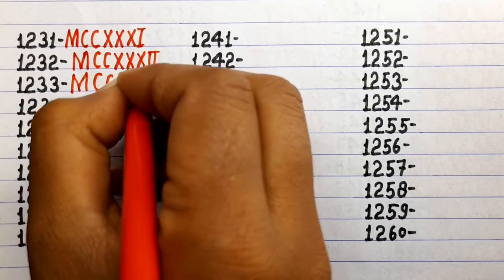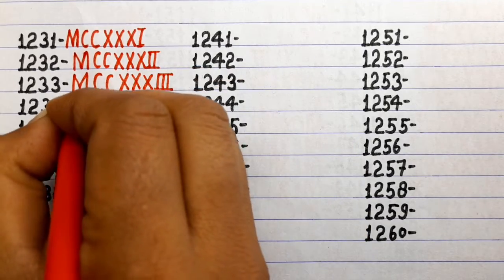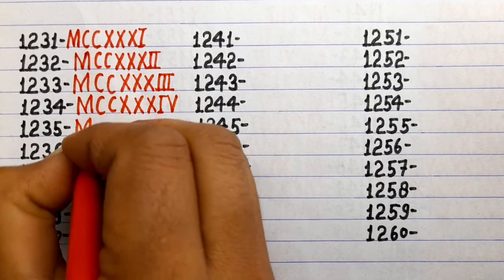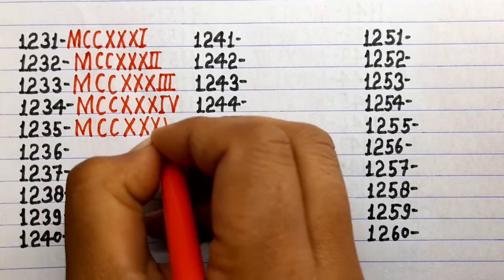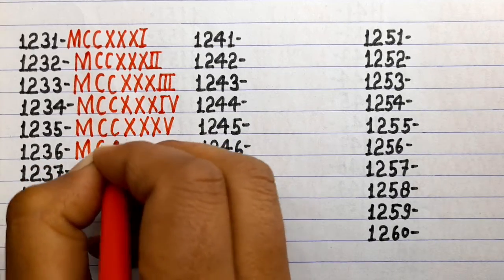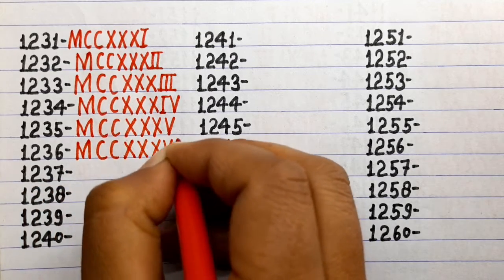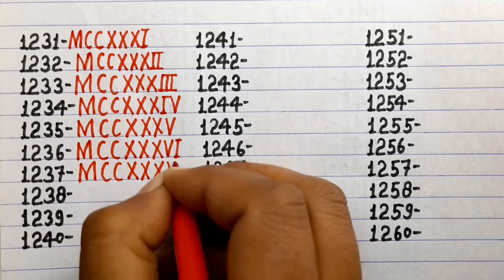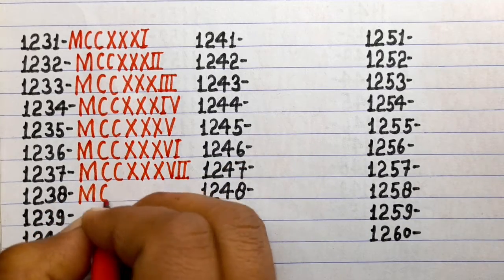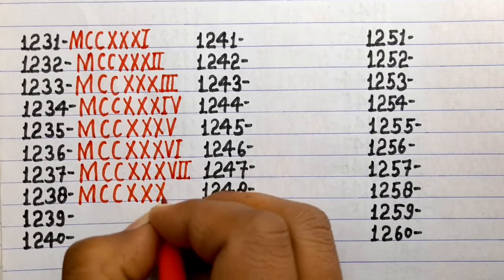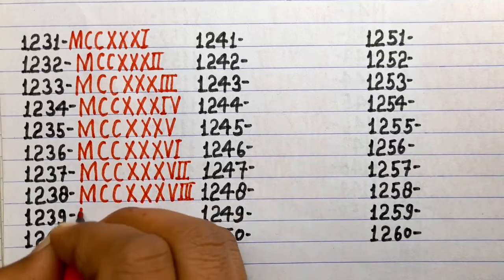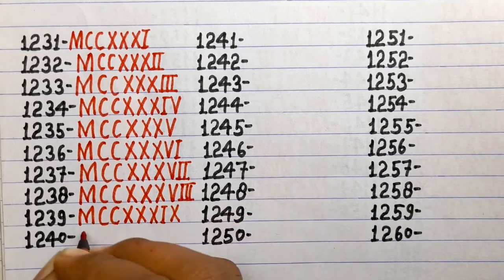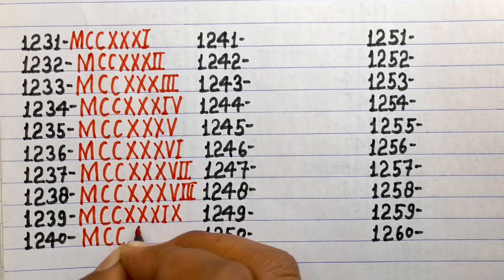1231 MCCXXXI, 1232 MCCXXXII, 1233 MCCXXXIII, 1234 MCCXXXIV, 1235 MCCXXXV, 1236 MCCXXXVI, 1237 MCCXXXVII, 1238 MCCXXXVIII, 1239 MCCXXXIX, 1240 MCCXL.